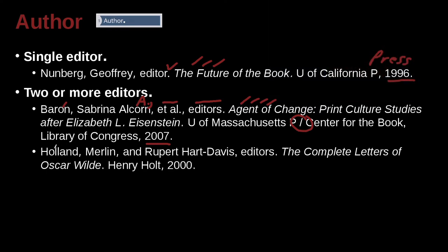Pay attention to how we write their names. The first person is last name first: Holland, first name Merlin. We have a comma, and then A-N-D. You do not use the ampersand — you cannot use the ampersand, you must use A-N-D. So here we have our 'and.' Now look what we have: Rupert Hart-Davis. That's a person's name. Some people's English names can be written with a hyphen like that — that's okay.